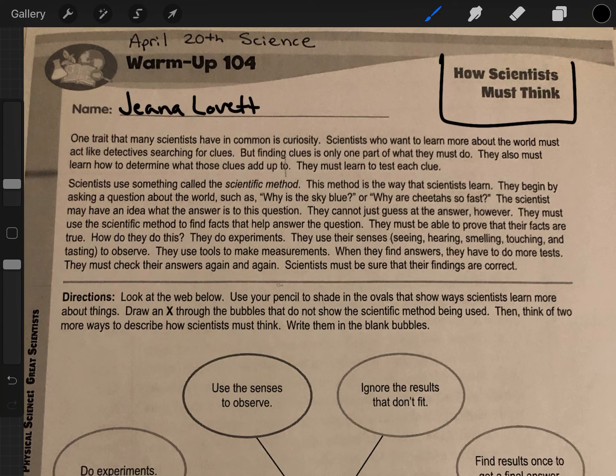They cannot just guess at the answer, however. They must use the scientific method to find facts that help answer the question. They must be able to prove their facts are true. How do they do this? They do experiments. They use their senses: seeing, hearing, smelling, touching, and tasting to observe.